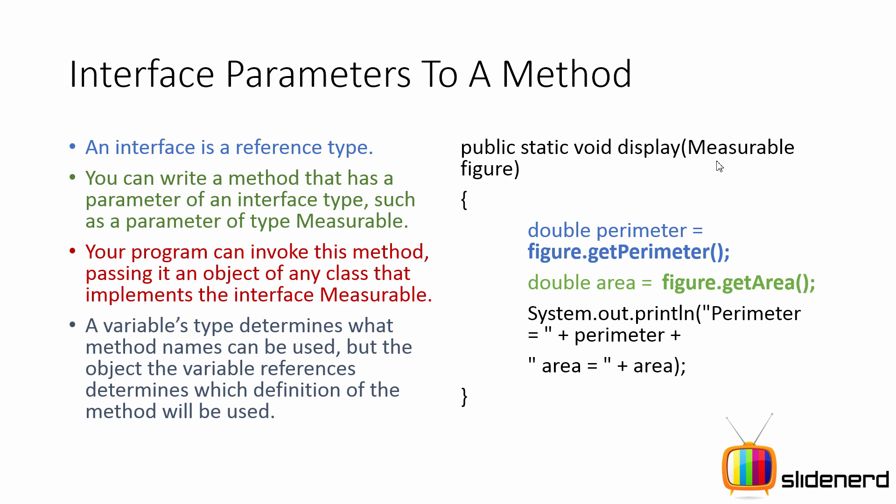This was the actual principle when I talked about this way back in my inheritance-based polymorphism videos. Now here things change very slightly. Here you have an interface reference variable that can actually point to an object that implements that interface.